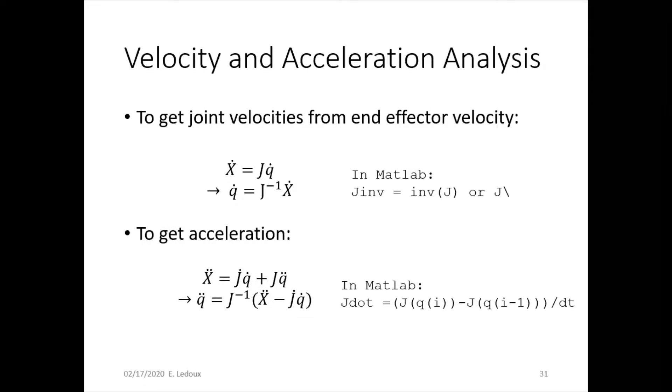To get acceleration, we just take the derivative of the velocity equation. But we have to remember, it's not just the joint velocities that are changing, it's the Jacobian is changing too. So we use product rule right here to take the derivative of this. It would be J dot times q dot plus J times q double dot.